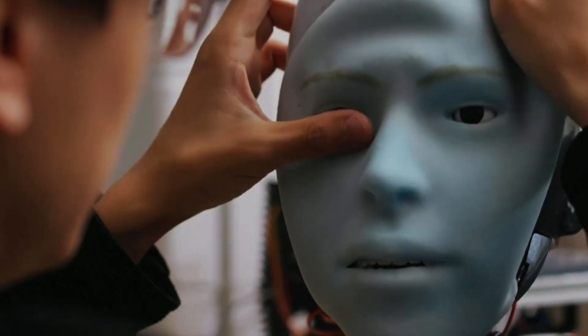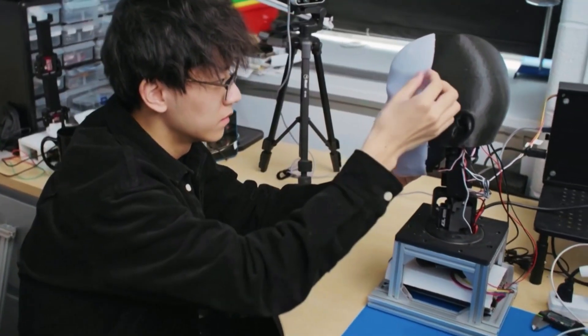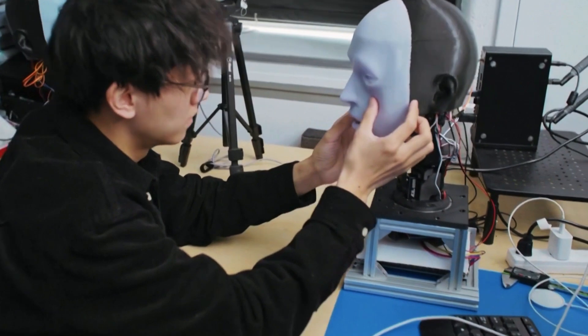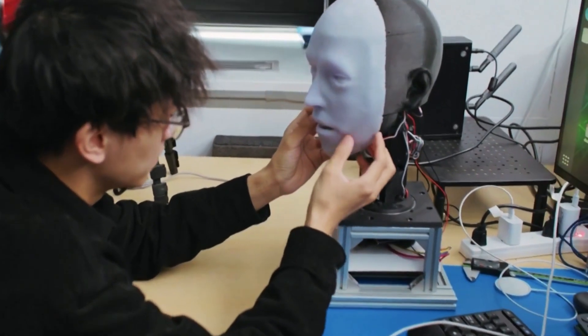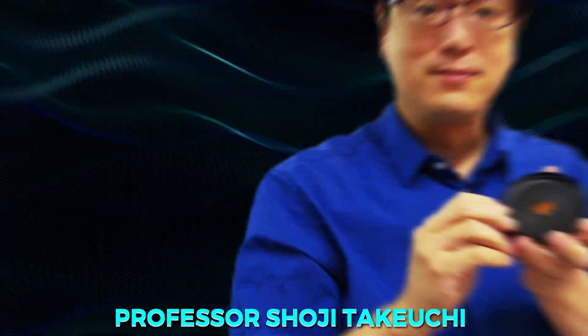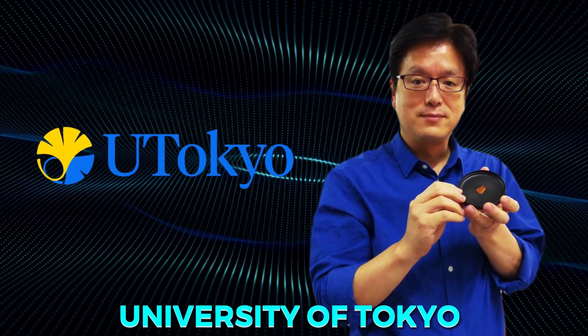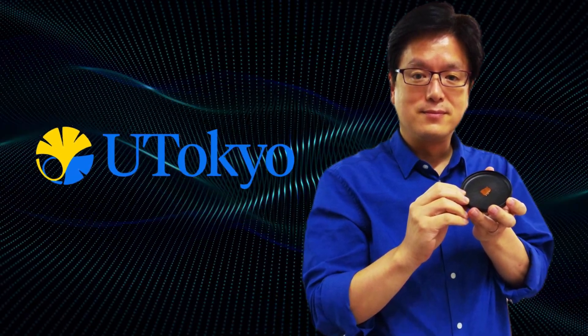This uncanny valley effect is a major challenge for roboticists who want to create robots that people can interact with naturally and comfortably. However, Professor Shoji Takeuchi and his team at the University of Tokyo might have just found a way to bridge this gap.